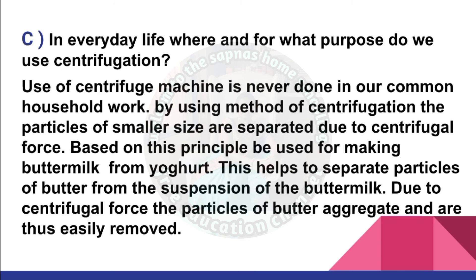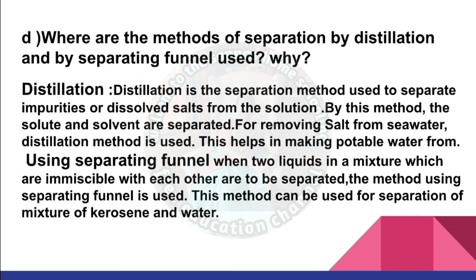In everyday life, where and for what purpose do we use centrifugation? The use of a centrifuge machine is rarely done in common household work. By using the method of centrifugation, particles of smaller size are separated due to centrifugal force. Based on this principle it is used for making butter from yogurt — this helps to separate particles of butter from the suspension of buttermilk due to centrifugal force, so the particles of butter aggregate and are easily removed.